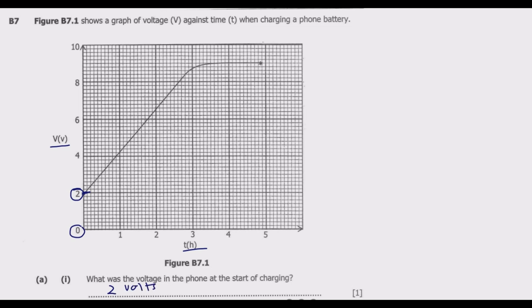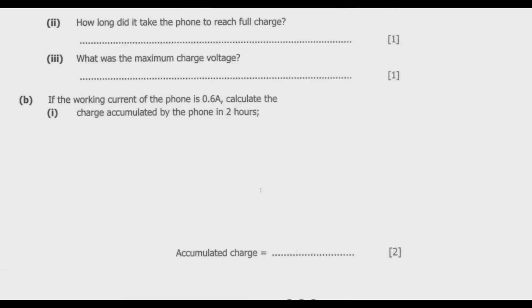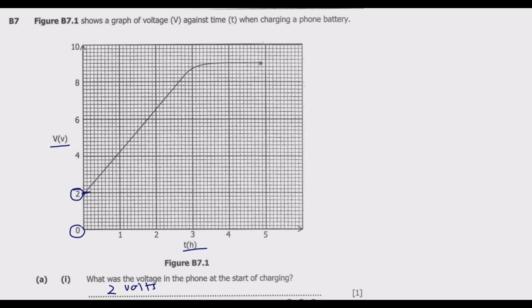Next question: How long did it take the phone to reach full charge? Let us go to the graph and see. You notice that from this point going forward the graph is flat, meaning the voltage is not changing. This is halfway between 8 and 10, so this should be 9. At this point, this is halfway between 3 hours and 4 hours.